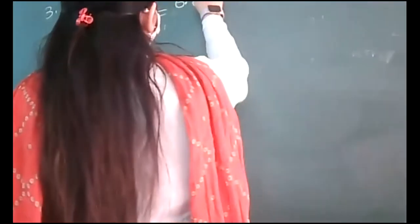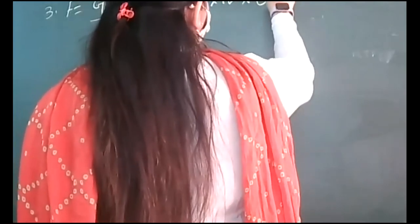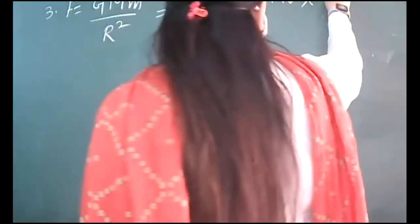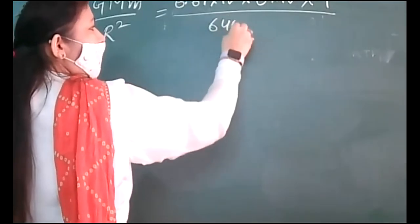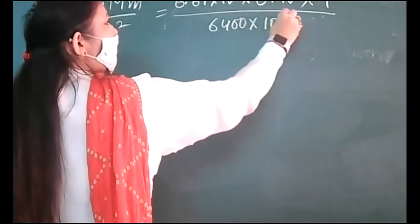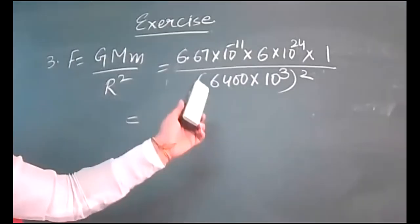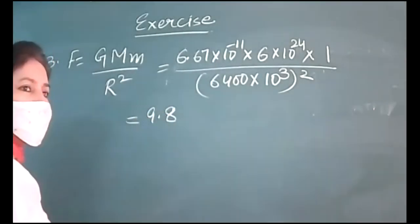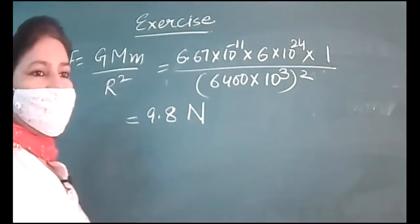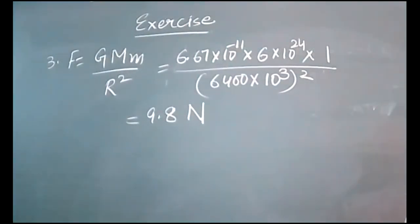What is the value of capital G? 6.67 into 10 raised to minus 11. Mass of Earth is 6 into 10 raised to 24 kilograms. Mass of stone is 1 kg. Over radius of Earth is 6400 kilometer, which is 6400 times 1000 meters. This calculation we already did when we calculated small g for Earth. It was 9.8. But since we're calculating force, the unit would be Newton.